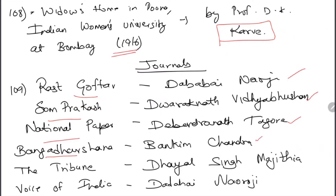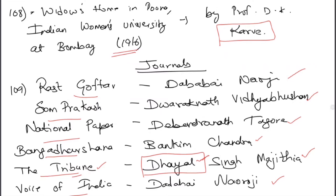Bangadarshana by Bankim Chandra Chatterjee. The Tribune by Dayal Singh Majithia — clue: 'Tribune' means giving, and 'Dayal' means big-hearted or generous in most Indian languages, so Tribune = Dayal. Voice of India by Dadabhai Naoroji — he opened institutions in Britain to make the British understand the situation in India, and wrote this book for the same purpose.